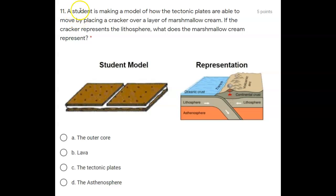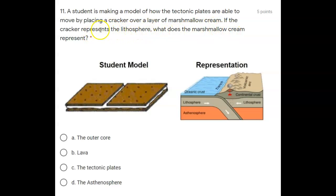Number 11. A student is making a model of how tectonic plates are able to move by placing a cracker over a layer of marshmallow cream. If the cracker represents the lithosphere, what does the marshmallow cream represent? It's a student model — a representation.